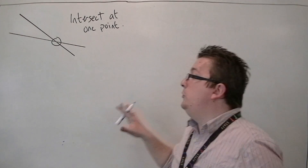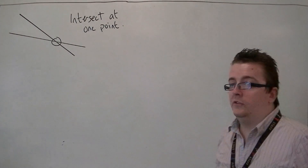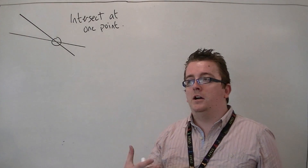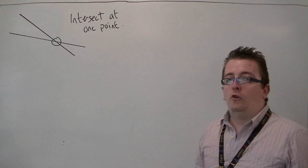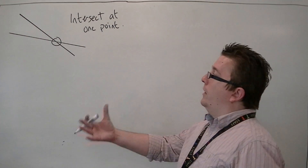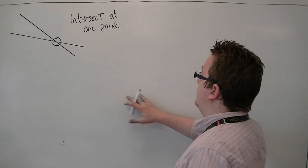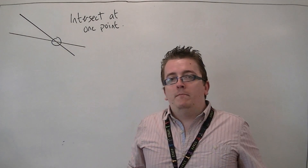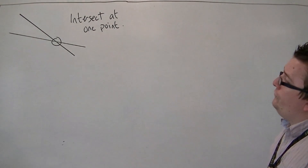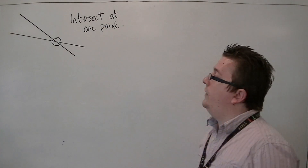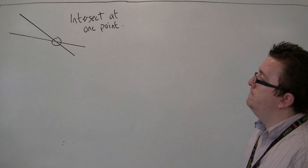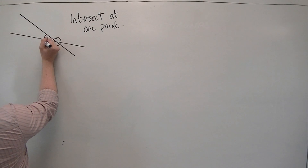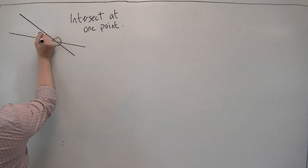On a 2D plane like this, that doesn't make any sense to us, unless you go into other forms of geometry. But for us, if I continue this straight line and this straight line forever and ever, they won't meet again. So they could intersect at one point, and in doing so, create an angle — let's call the angle theta.